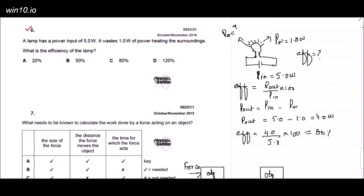This is question number six, from the October/November 2016 series. The question is: a lamp has a power input of 5.0 watts and uses 1.0 watt of power heating the surroundings. What is the efficiency of the lamp? In the diagram, the power input is 5.0 watts, the waste power as heat is 1.0 watt, and we need to find the efficiency.